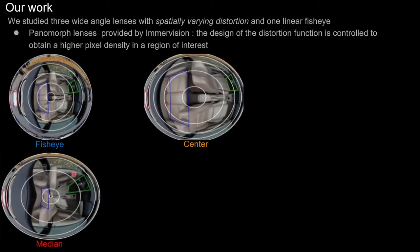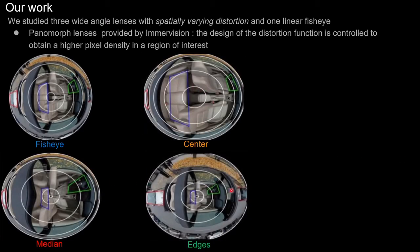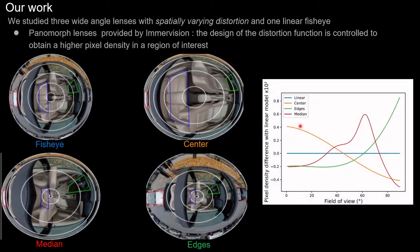Respectively the center, the median zone, and the edges of the image. We can observe here the different rendering that can be explained with the curve on the right, showing the relative pixel density across the field of view compared to the linear fisheye represented with the blue line.